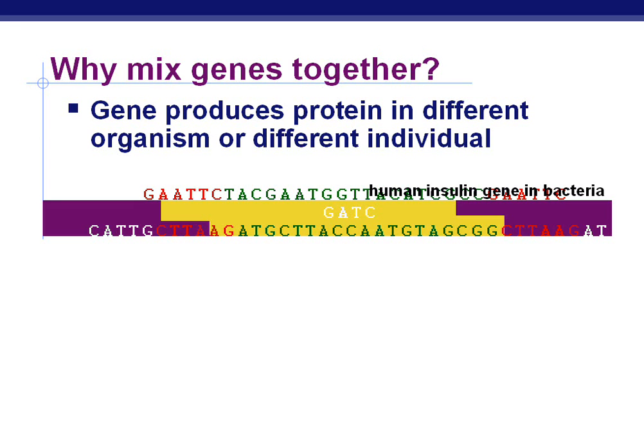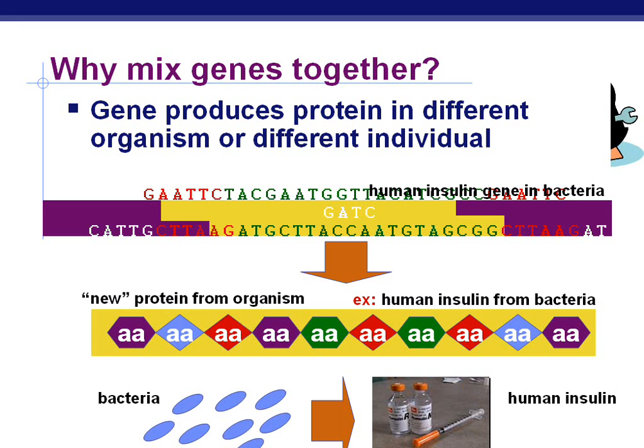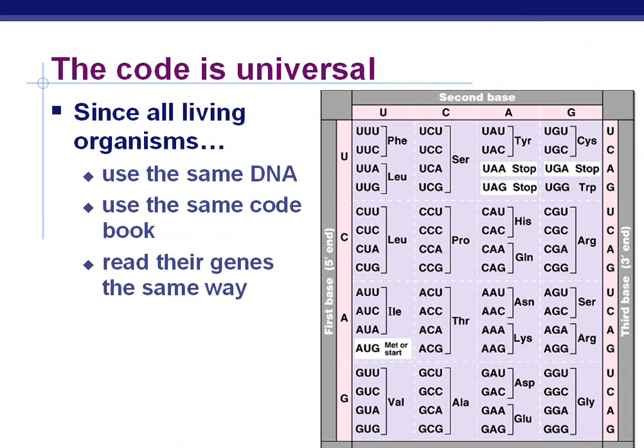Why do we want to mix genes together to begin with? The gene produces a protein in a different organism or even a different individual. Maybe we want to produce human insulin in bacteria. In the past, we got all of our insulin to give to diabetics from pigs because we're very, very similar. But if we can have bacteria produce it for us, then that's a better deal. Now, how can bacteria read human DNA? Remember — the genetic code is universal. All organisms use the same DNA and read their genes in the same way.